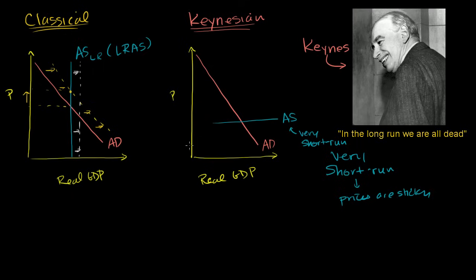In this model right over here, the only way to increase GDP was on the supply side. In this model right over here, the only way to increase GDP is on the demand side. To actually either through monetary policy, print more money, or through fiscal policy.